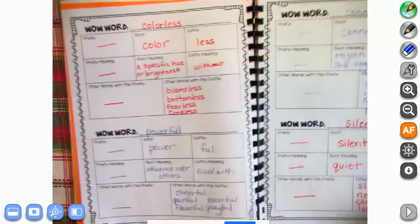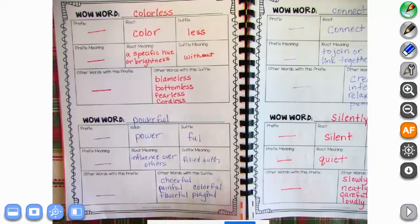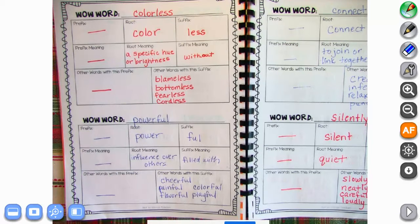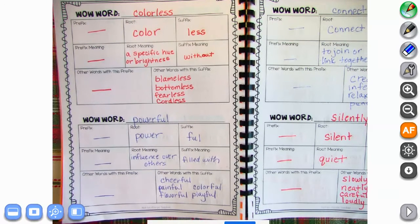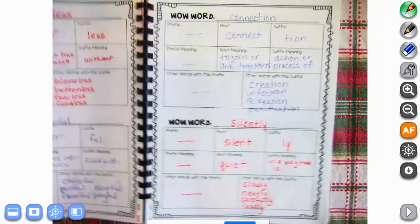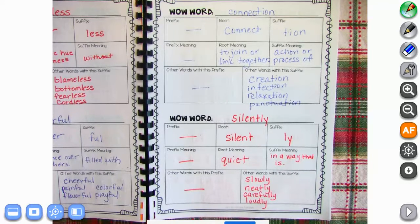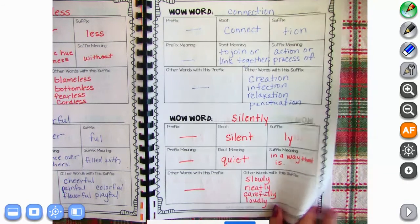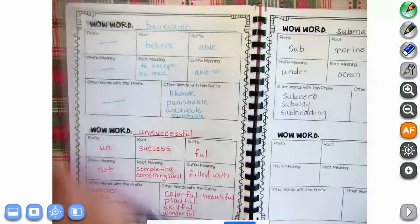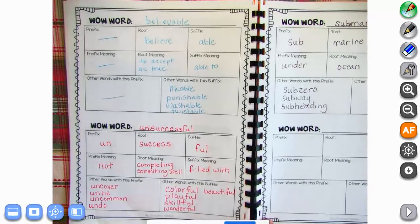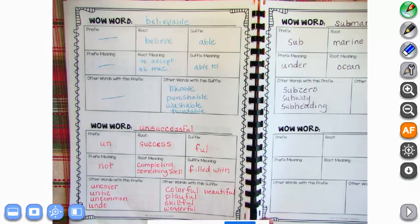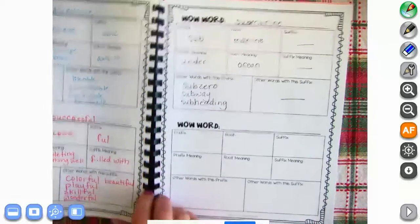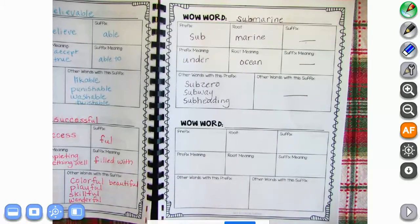We have the next page: colorless and powerful. Make sure you get that written down. Go ahead and press pause if you have anything you need to fill in from this page. The next page we have connection and silently. Go ahead and press pause if you're missing anything on that page. And then yesterday, submarine. Press pause if you're missing anything there.